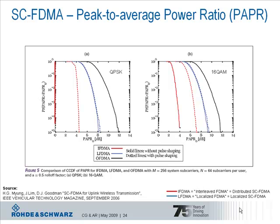As we can see, the crest factor for OFDM is constant at around 12 dB, which is comparable to WiMAX, and is independent of the modulation scheme and the filter used. For localized FDMA — the blue line, which is the mode used in LTE — the peak-to-average power ratio is around 8 dB for QPSK modulation, and therefore 3 dB lower than OFDMA. For 16QAM, the difference is just around 2 dB.